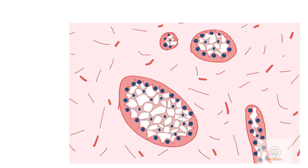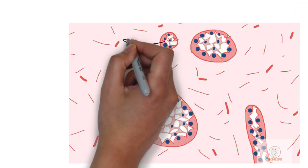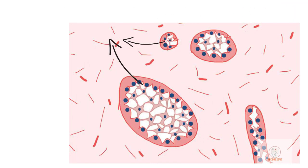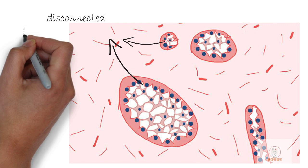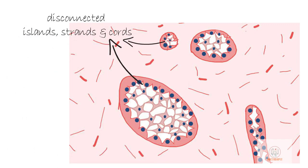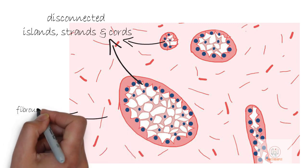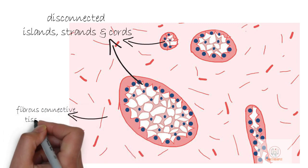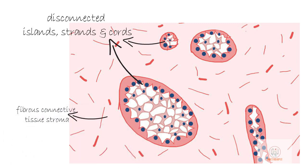The neoplastic epithelial component proliferates as disconnected islands, strands, and cords of varying sizes. The connective tissue is fibrous and is only supportive to the neoplastic epithelial component.